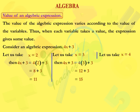Let us take x is equal to 4. Then, 4x plus 3 is equal to 4 into 4 plus 3, which is equal to 16 plus 3, which is equal to 19.